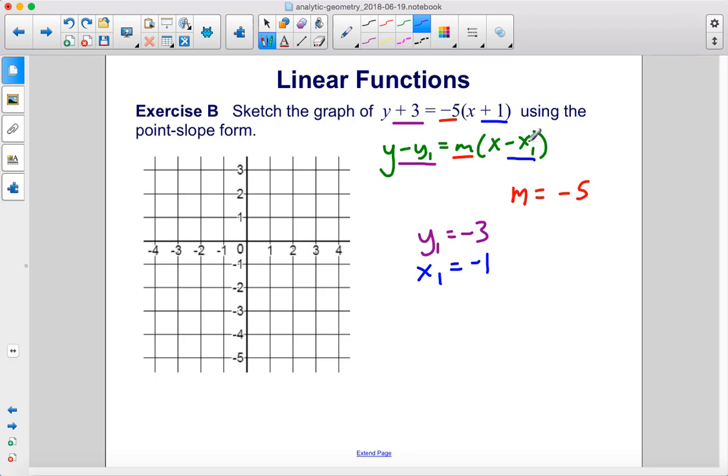If you put negative 1 in here, this negative sign will cancel out with the negative sign in these parentheses here and it will become positive 1. So we now know that our point is negative 1 comma negative 3 and our slope is negative 5.